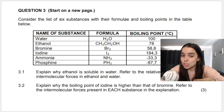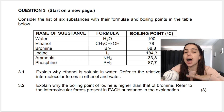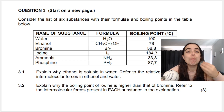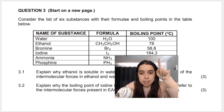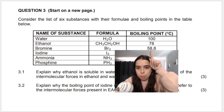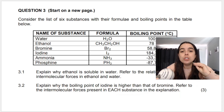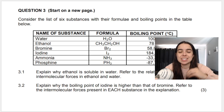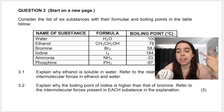Question 3.2: explain why the boiling point of iodine is higher than that of bromine. Both are given on the table — iodine has a higher boiling point of 184.3°C and bromine has a lower boiling point of 58.8°C. Referring to the intermolecular forces present in each substance, your answer must include the intermolecular forces of bromine and iodine, and explain why one has a higher boiling point.